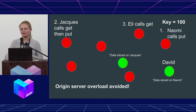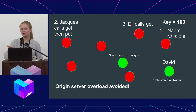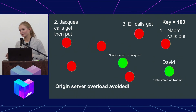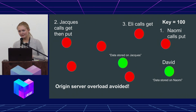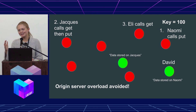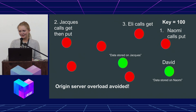So now there's two nodes that have this key. And when Eli calls get, he's going to run into Jacques's node, and he's going to then query Jacques instead of Naomi. So we're avoiding origin server overload, and this is huge. This is a huge revelation in the DHT community, and we're using it now for libp2p instead of the original Kademlia DHT. And it's going to enable much faster lookups. So that's what we're doing this summer.